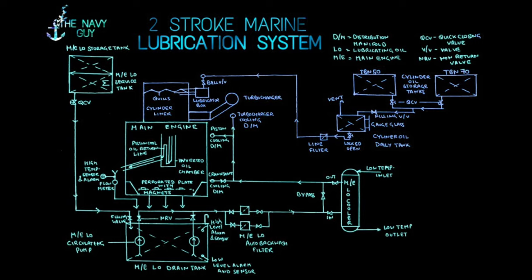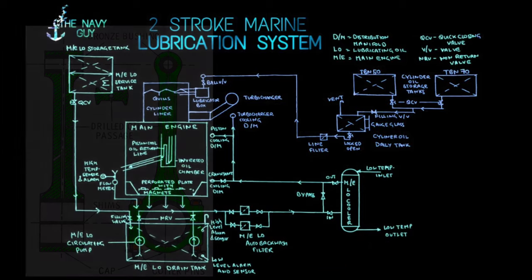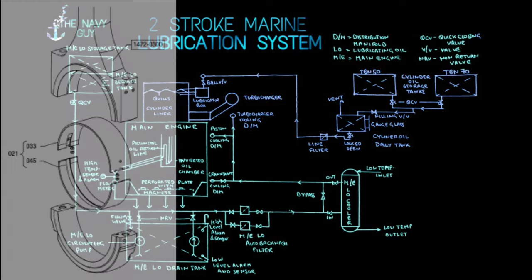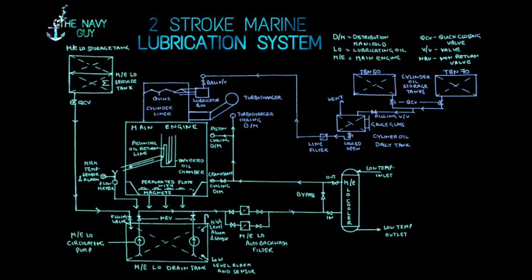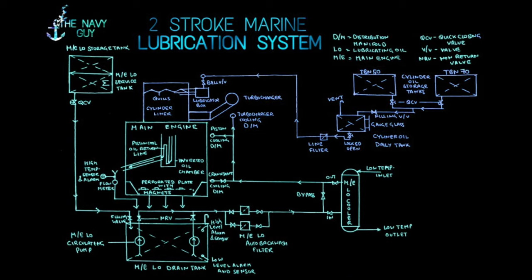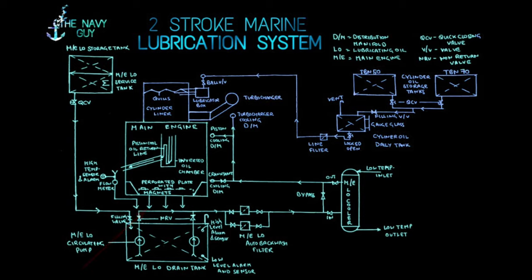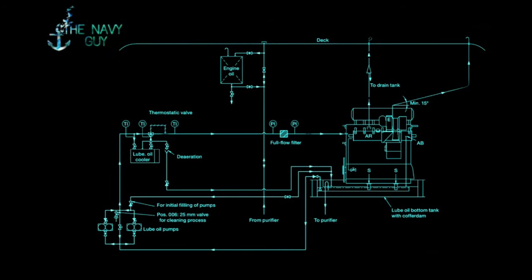The rest of the oil from the crosshead gutters and shoes travels into the connecting rod drilled passage, cooling it in a downward direction. Oil then enters the crankpin bearing top shell, cooling it, and via drilled passages and joint center into the bottom shell. Oil is then discharged from the bottom holes to the main engine lube oil drain tank via a perforated plate fitted with magnets on every alternate crank, to remove worn-off iron particles. From the crankshaft cooling distribution manifold, oil enters the main bearing journal via drilled passages, travels through the webs and journals of the crankshaft, and returns to the lube oil drain tank via the same perforated plate with magnets.